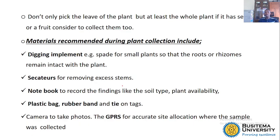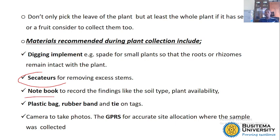During collecting, we need some implements. For example, for digging you can use a hoe or a spade for small plants that have roots, so that you collect the roots. You also need what are called secateurs, which are used to remove excess leaves or excess branches from the plant during preparation. A notebook is also important for recording important findings.